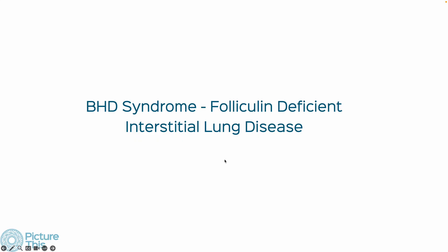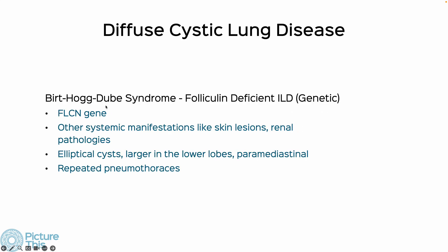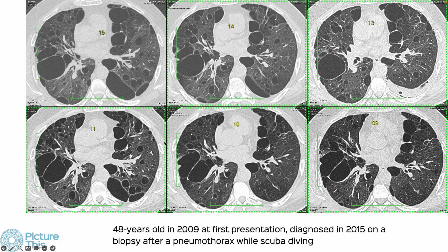BHD syndrome is now labeled folliculin-deficient ILD in the new nomenclature guidelines. It is Birt-Hogg-Dubé syndrome, caused by a deficient FLCN gene, and may have other systemic manifestations like skin lesions and renal pathologies. This is usually asymptomatic. Our first understanding of this condition came from a patient who was symptomatic — we called it idiopathic cystic disease in 2009, placed them on follow-up, and nothing much was happening until 2015 when scuba diving in Hawaii led to a pneumothorax and an airlift to UCSF.